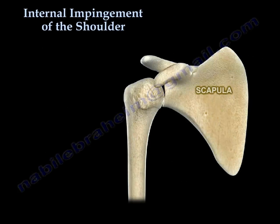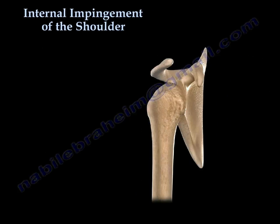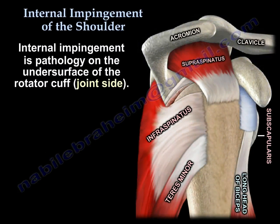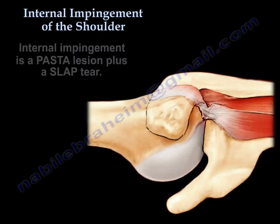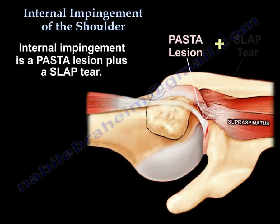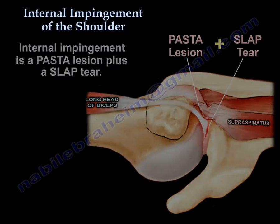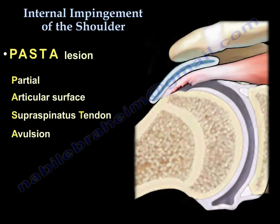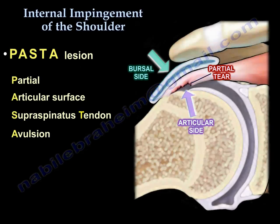Internal impingement of the shoulder is pathology on the undersurface of the rotator cuff — the joint side. Internal impingement is a PASTA lesion plus a SLAP tear. PASTA stands for partial articular surface supraspinatus tendon avulsion. You can see here the partial tear on the articular side.